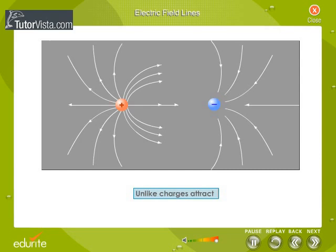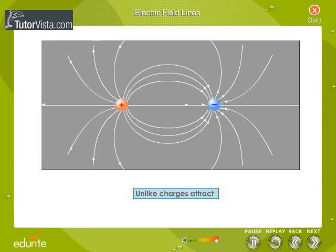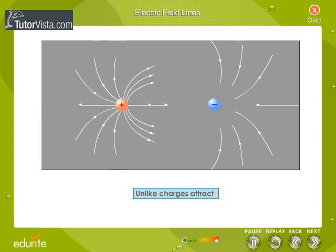The lines of force between two opposite charges tend to contract lengthwise, showing that the opposite charges attract. Arrows on the field lines show the directions.